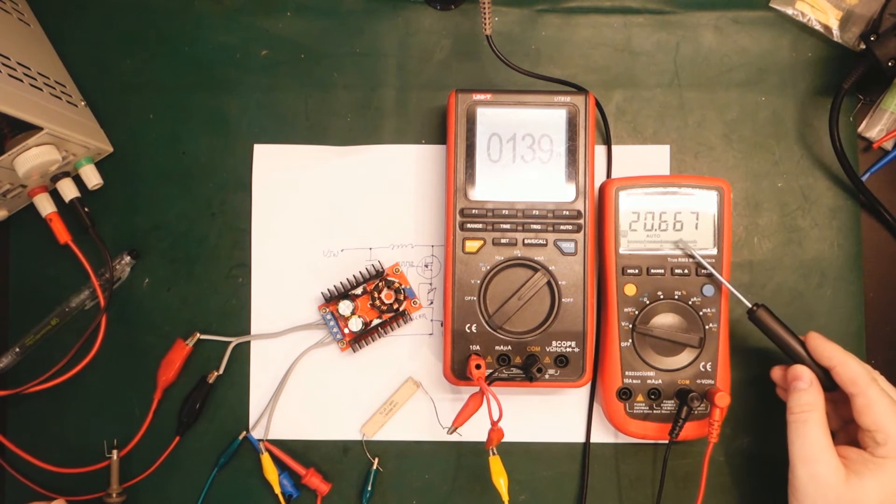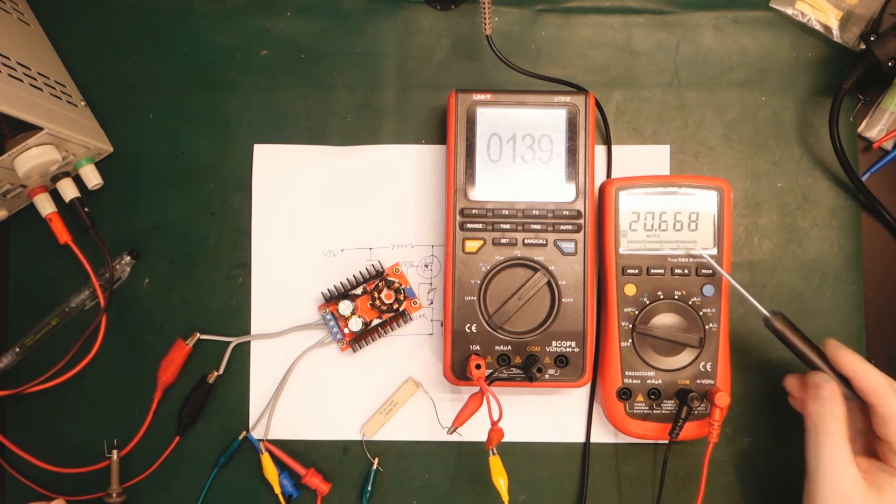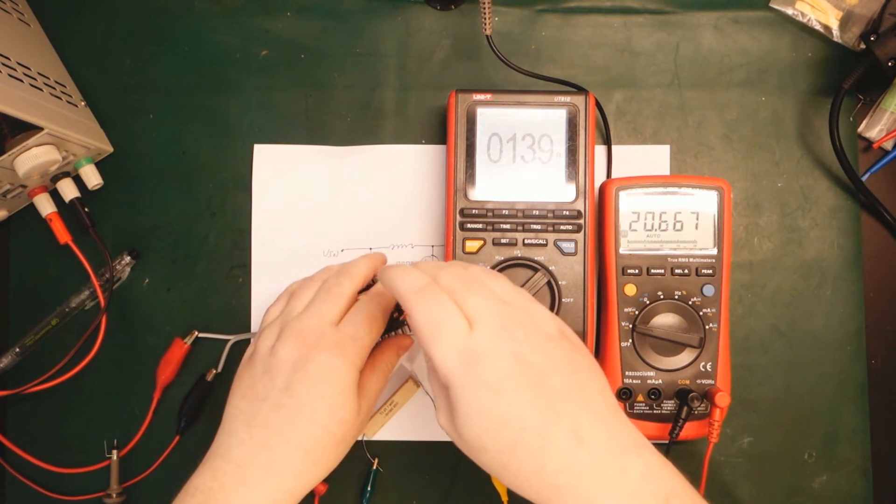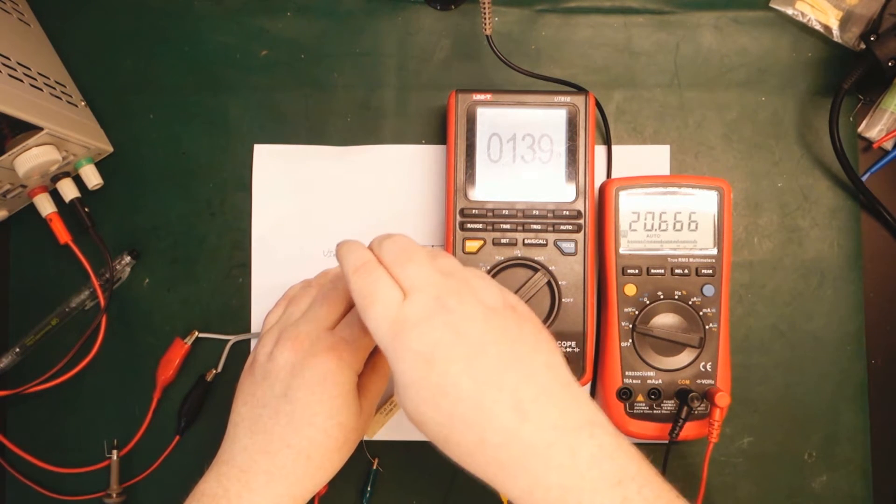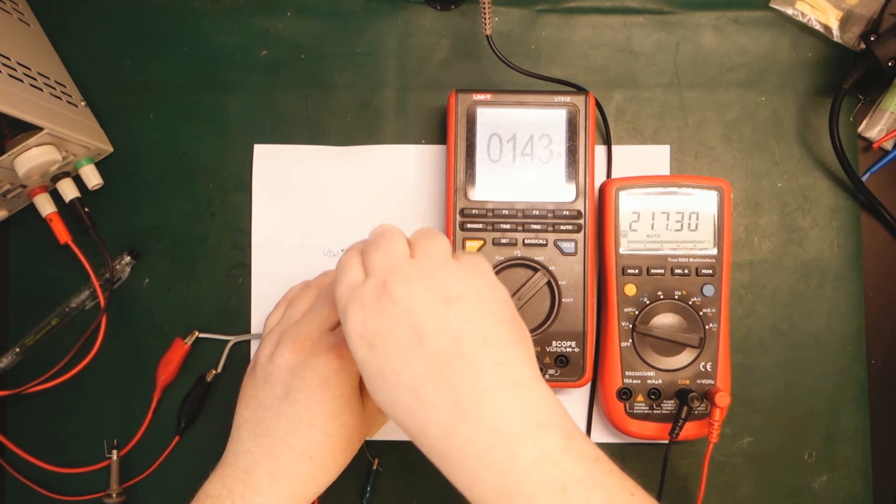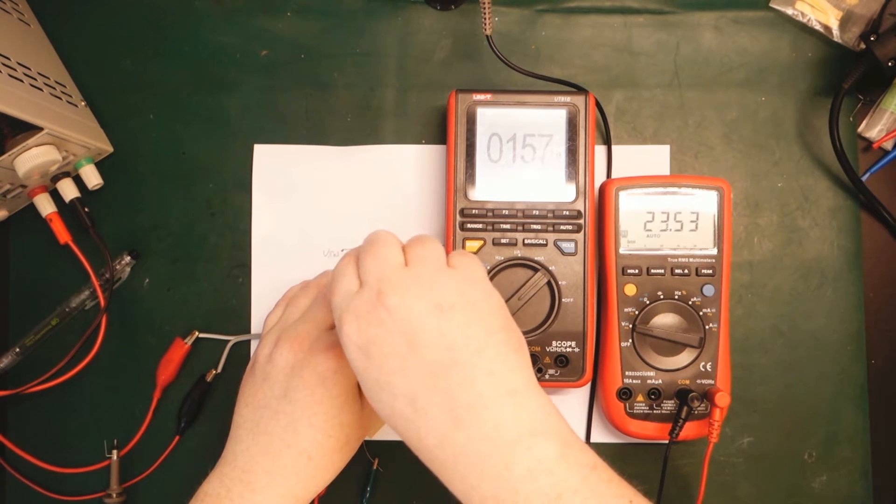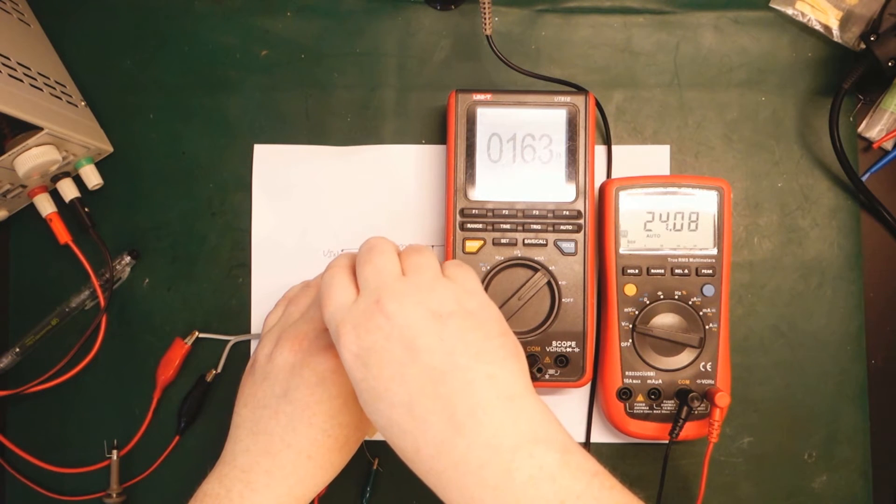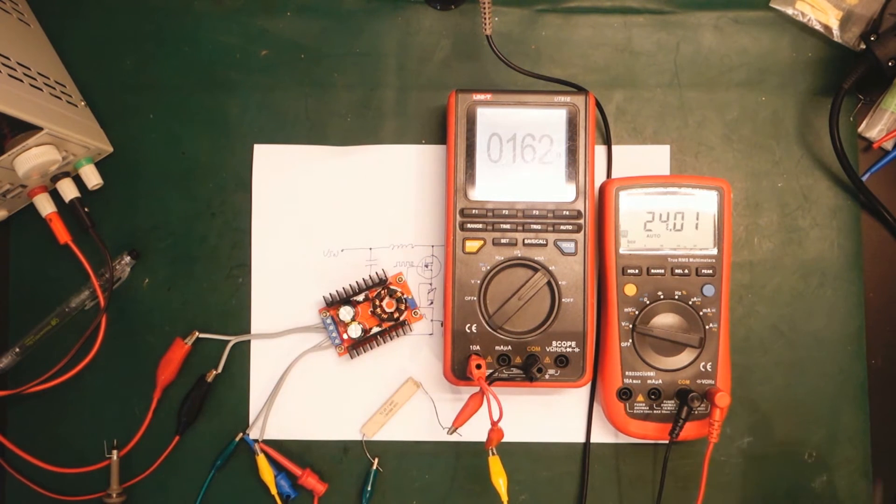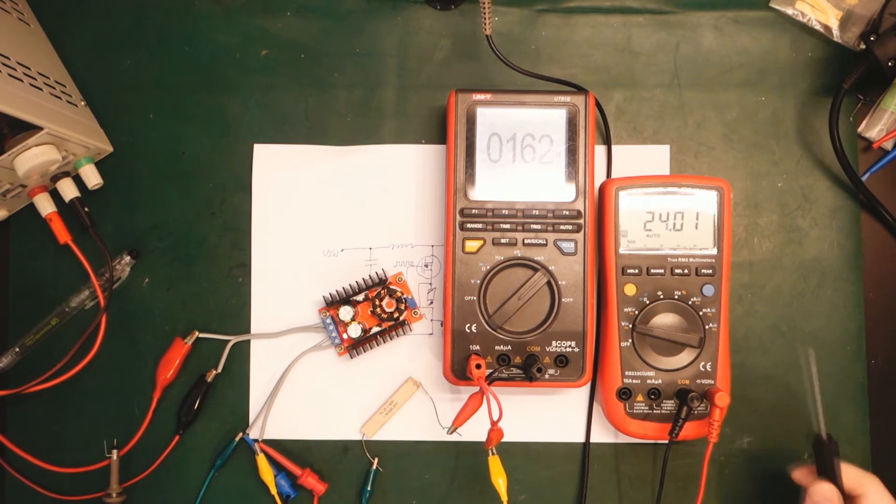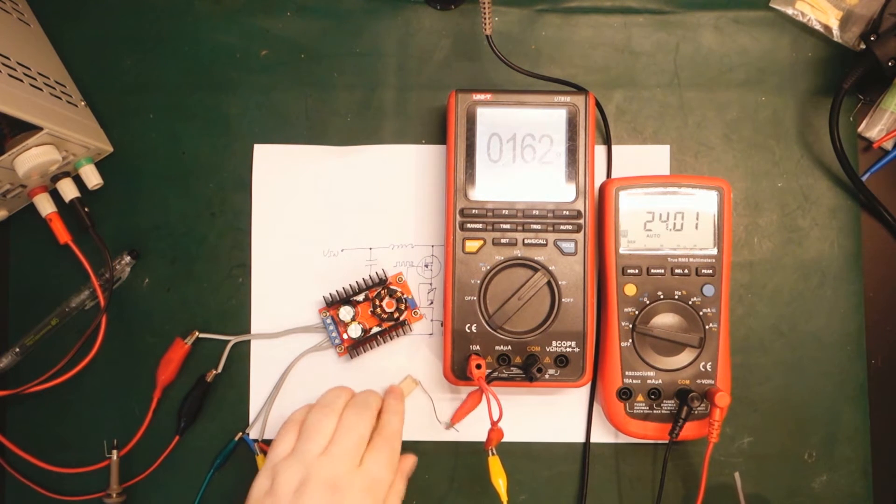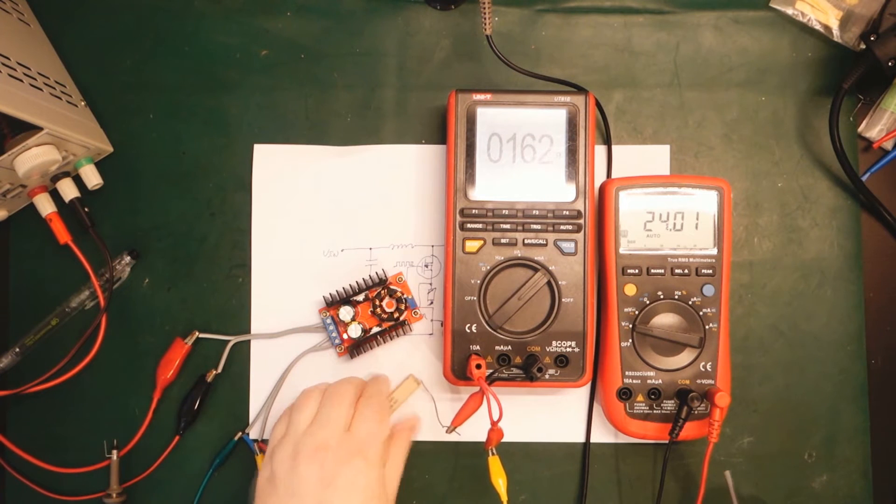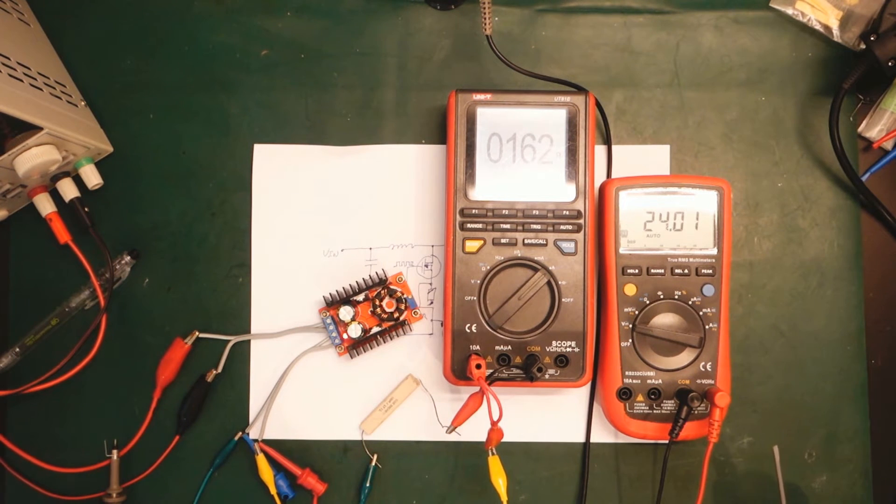We can see currently we have 20.6 volts. Let me just adjust that to 24 volts. There we go. Almost there. That's about 24 volts there. 162 milliamps to this resistor here. It just gets a little bit warm. Nothing too crazy.